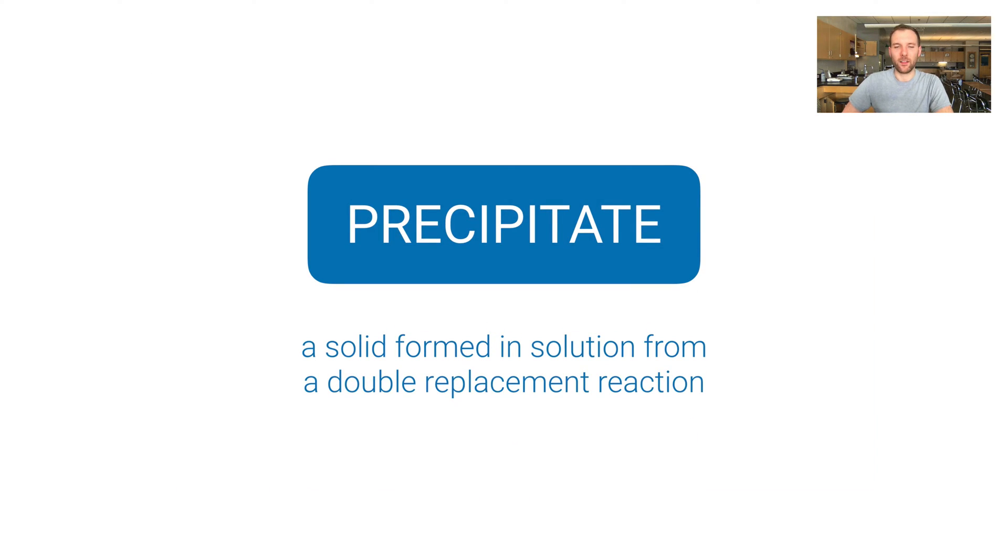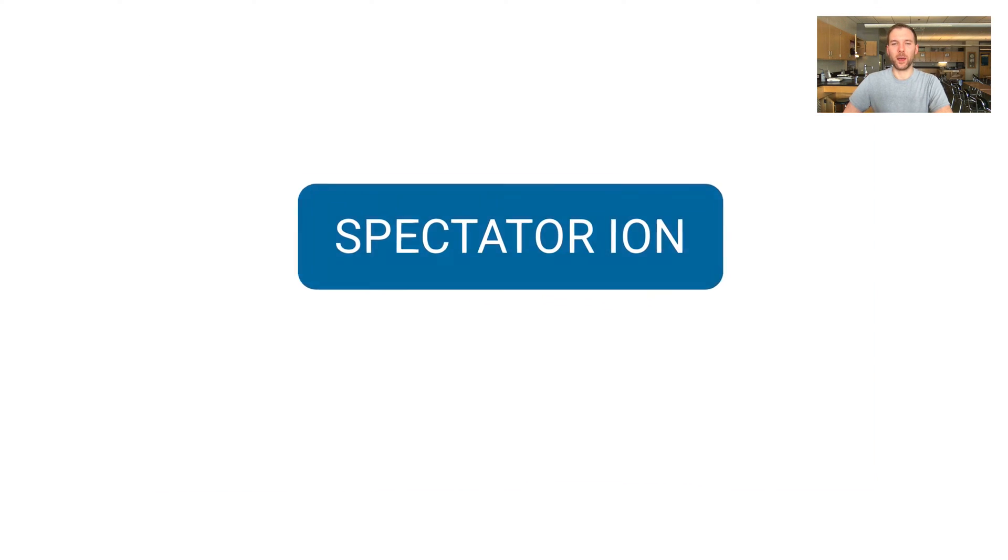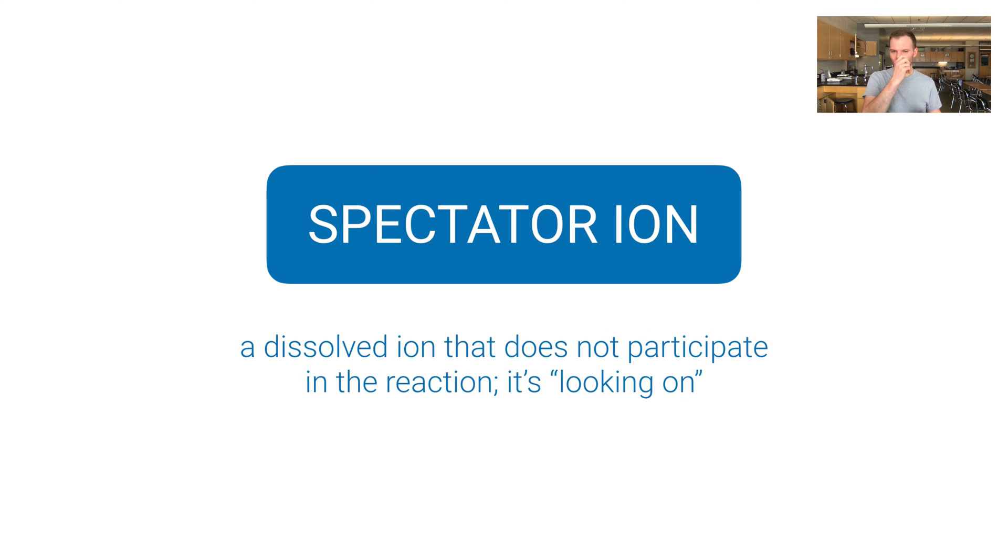And a precipitate is a solid that's formed in solution from a double replacement reaction. Again that's also sometimes called a precipitation reaction. Back to this, the other ions B minus and C plus those are still soluble. They're still swimming around in water having a good time. And those we actually have a term for. They're called spectator ions. And a spectator ion is a dissolved ion that does not participate in the reaction. It gets this name spectator because it seems as if it's just looking on.